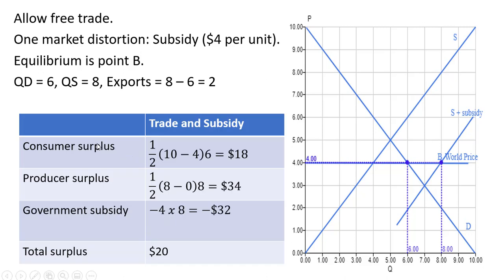Now looking at consumer surplus, producer surplus, and the size of the government expenditures with the trade and subsidy. Consumer surplus is going to be the difference between the height of the demand curve and the price that consumers are paying, all the way up to the amount that consumers are buying, which is six units. So this is a triangle right here that I'm outlining with my mouse. And we have $18.